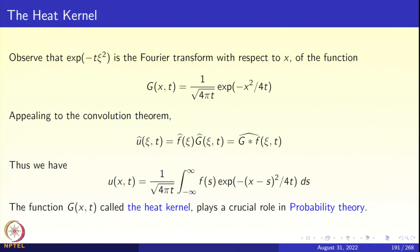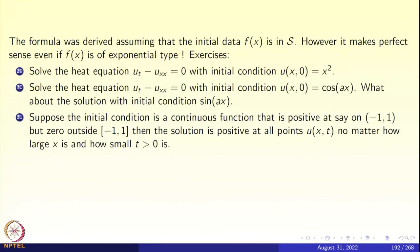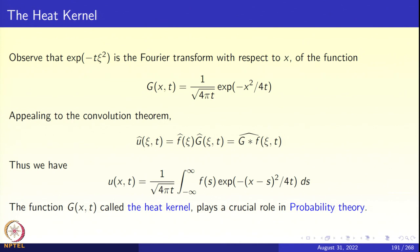This integral representation is very important because it enables us to make estimates easily. The formula was derived assuming f(x) was in the Schwarz space. If the initial data is instead in L2, we observe that the factor e^(−(x−s)²/(4t)) is rapidly decreasing, so we can allow f(s) to be in spaces like L2.